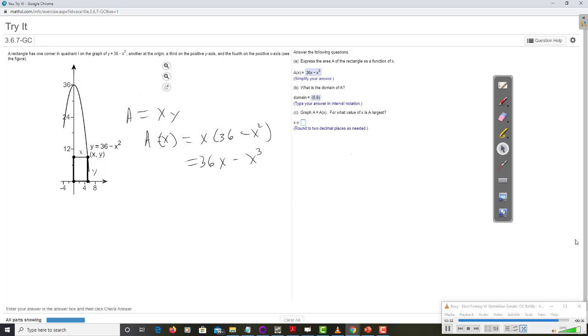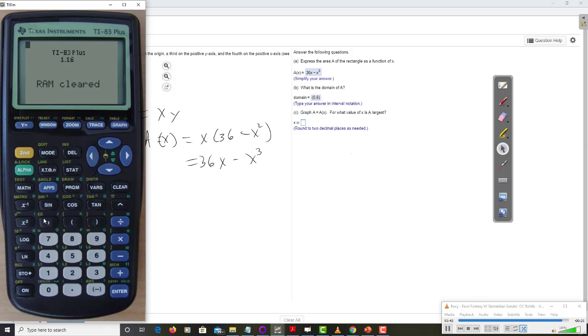Graph A equal A of x. For what value of x is A largest? Alright, let's go get our calculator. We're going to do a problem like this. Well, we graph it. So we got 36x minus x to the third. Take a look there. Yeah, we won't be able to see it here. We need to change our window. Change our y max to, let's say 150 for now. See how that does.